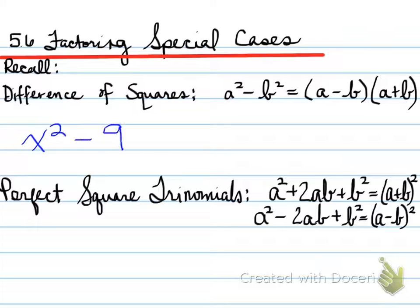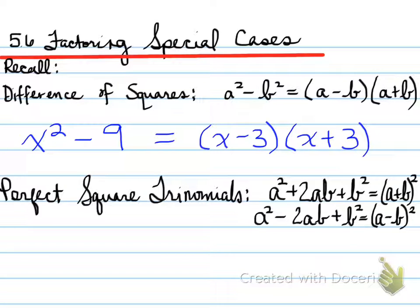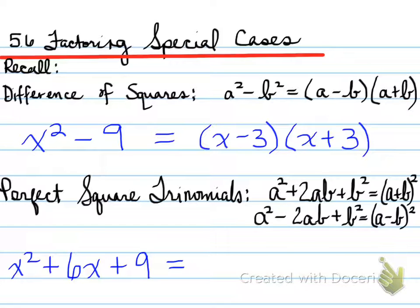Here are some examples. If you're asked to factor x squared minus 9, that's a perfect square — x is squared — and 9 is a perfect square, which is 3 squared. x squared minus 3 squared is a difference of squares, so we write (x minus 3)(x plus 3). On this particular page we're looking at just difference of squares. For x squared minus 4, it will be (x minus 2)(x plus 2).